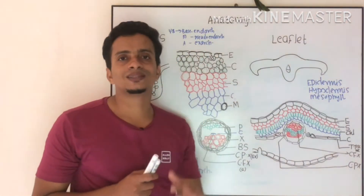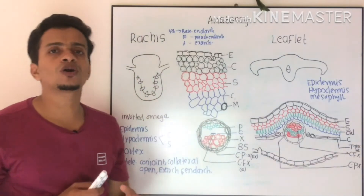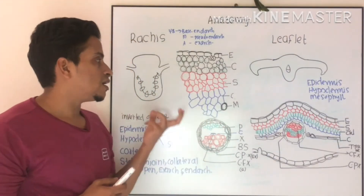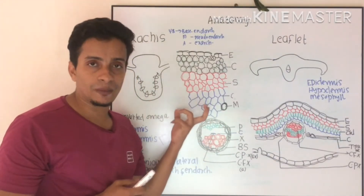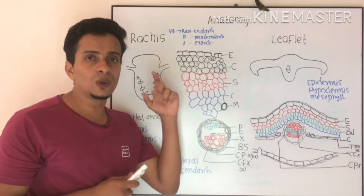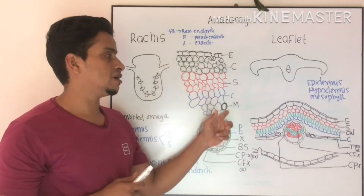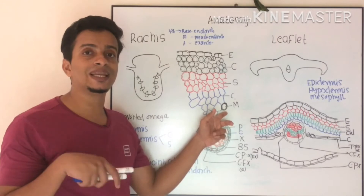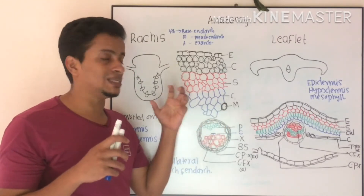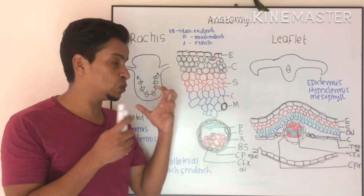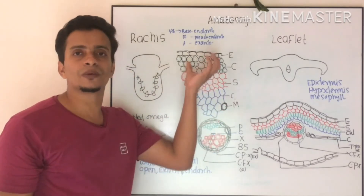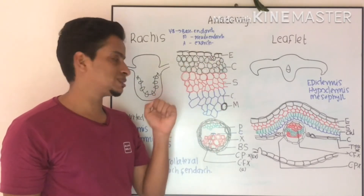Below this, you can see a broad cortex which is made up of parenchyma cells. One peculiarity is there: you can see mucilaginous cells, or mucilage-secreting cells. This is the peculiarity of the cortex.